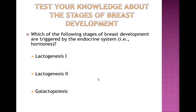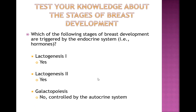To test your knowledge: of lactogenesis 1, lactogenesis 2, and galactopoiesis, which are triggered by the endocrine system (hormones) and which are triggered by the autocrine system? Lactogenesis 1 and 2 are controlled by the endocrine system; galactopoiesis is controlled by the autocrine system.